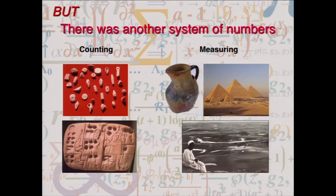But there was another system of numbers. What about the numbers that are used for building pyramids, measuring volumes of things, seeing how much land you own when the Nile Delta. This is the Nile Delta. When the Nile Delta floods and you have to remap the thing. There was measurement. That was going on as well.